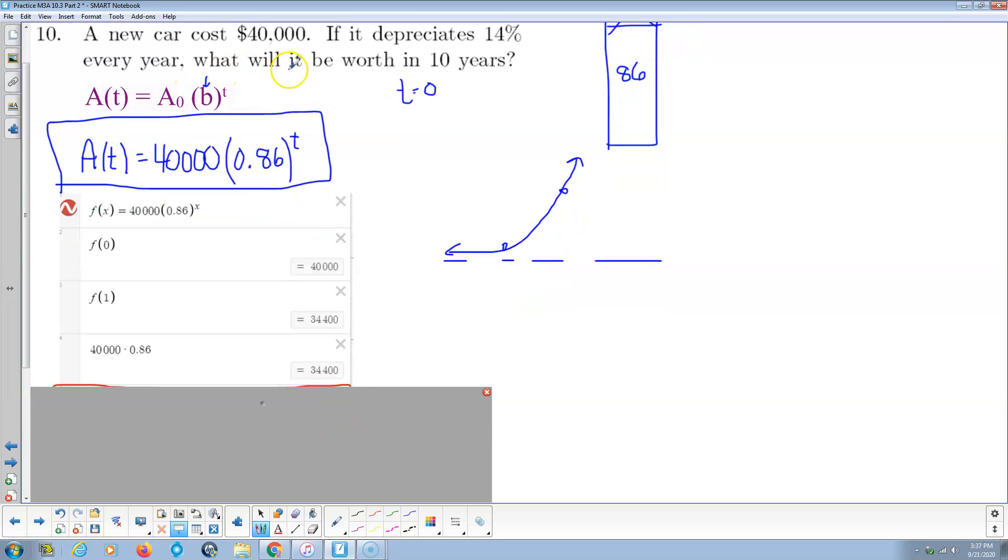And so it basically says, hey, what will it be worth in 10 years? Well, let's find f of 10. So we put f of 10 in, and it says $8,852 to the nearest whole dollar. Final answer. Okay, that took us less than two minutes. Not bad, huh? So there we go.